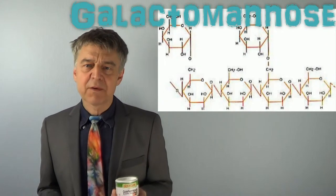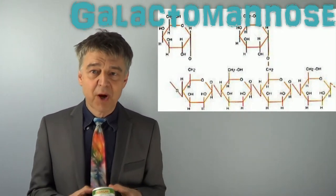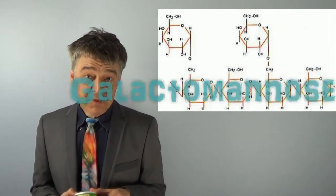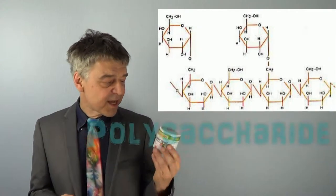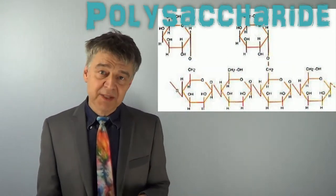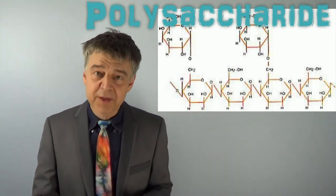But let's stay for a little while at the raw materials and look at them more closely. Guar gum is made up of galactomannan, a substance that is similar to the carbohydrate starch or to cellulose. The chemist calls it a polysaccharide. Guar gum is used as a thickener, for example in ketchup or in pet food.